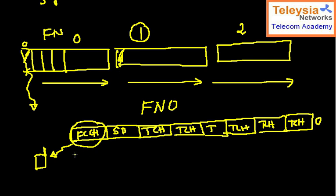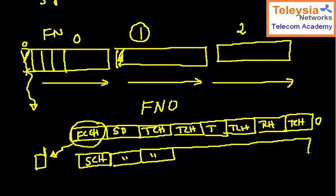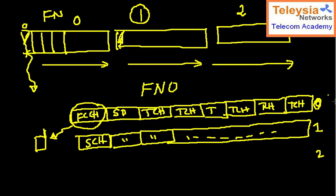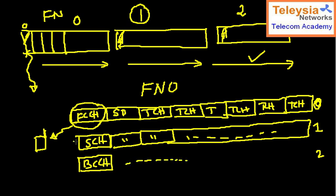When frame number one comes, I check what is coming in time slot zero, and I find it is the SCH — the Synchronization Channel. Then frame number two arrives, and again checking time slot zero, I find this is the BCCH channel. So the first time it was the Frequency Correction Channel, the second time it was the Synchronization Channel, and the third time it was the BCCH channel.